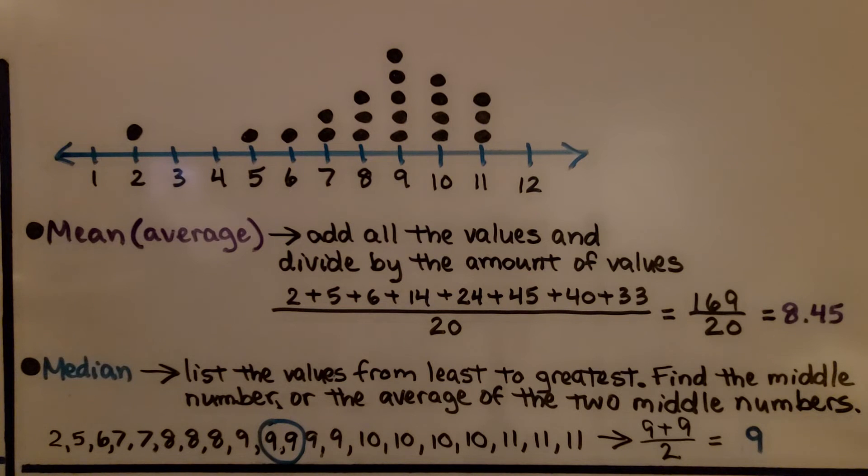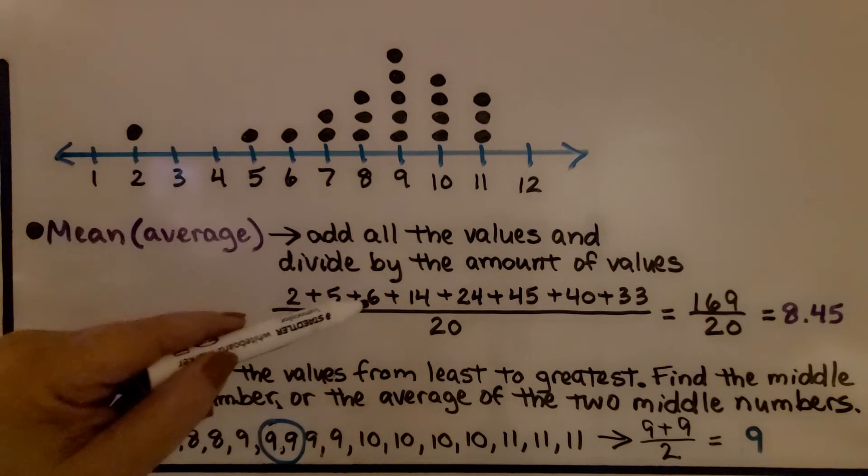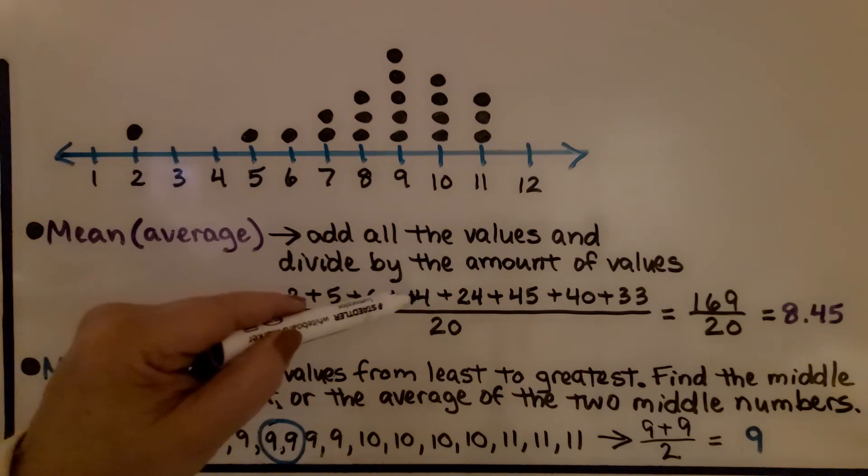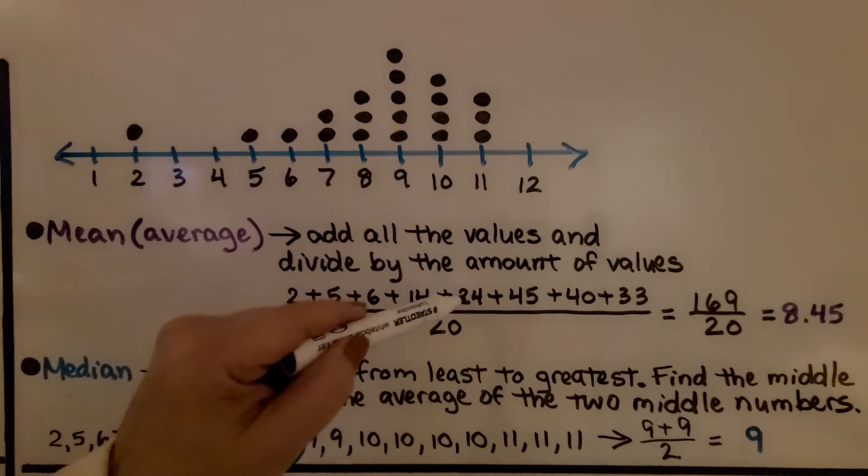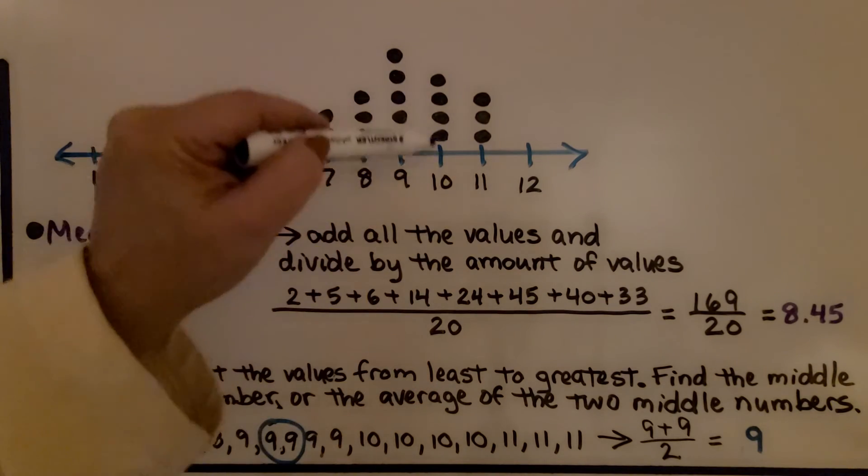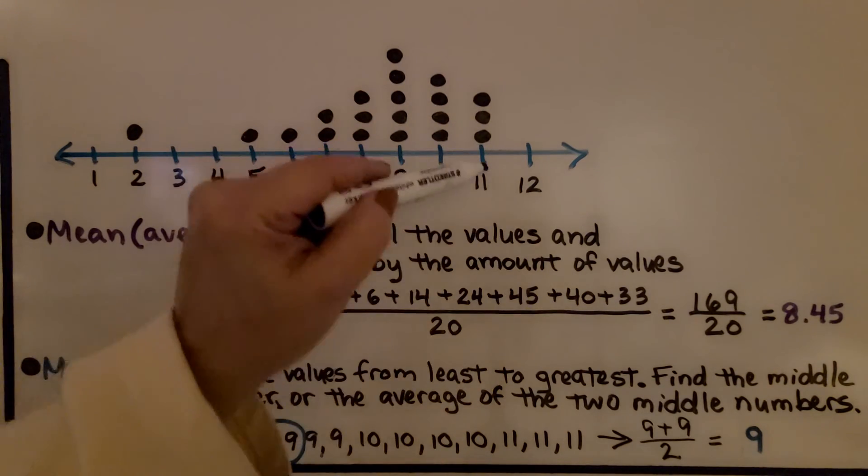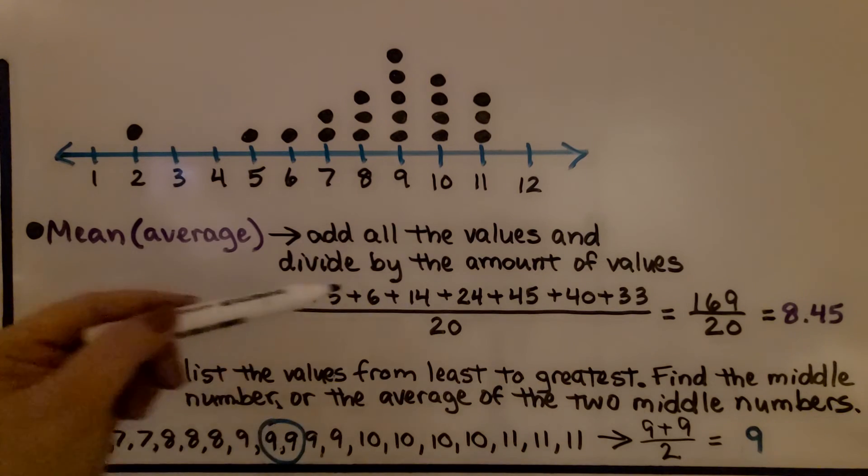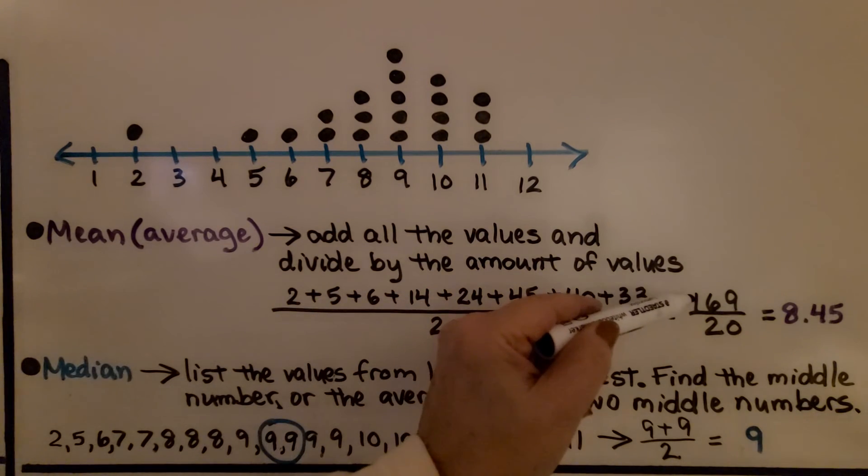To find the mean, the average, we add all the values and divide by the amount of values. We have a 2, a 5, a 6. We have 2 sevens, which is 14. We have 3 eights, which is 24. We have 9 times 5, which is 45. We have 4 times 10, which is 40. And 3 times 11 is 33. We add them all up and get 169.